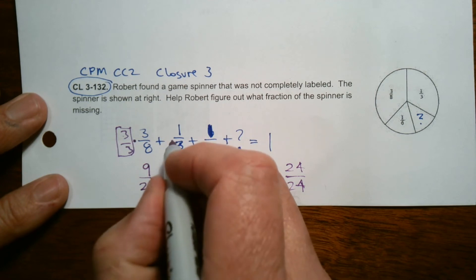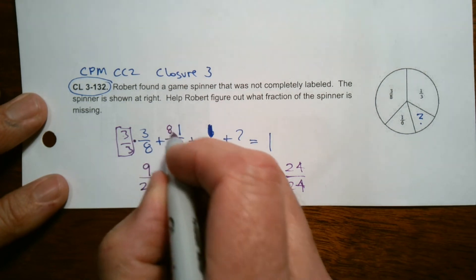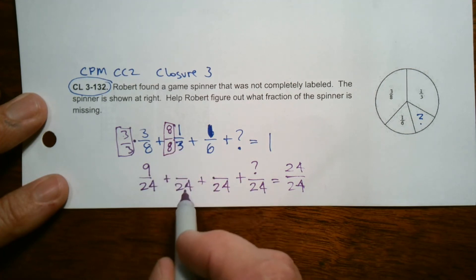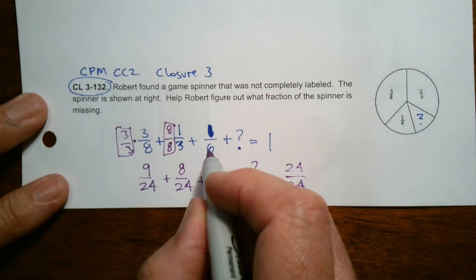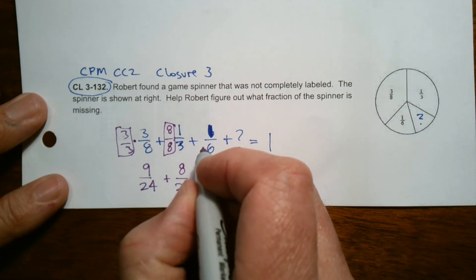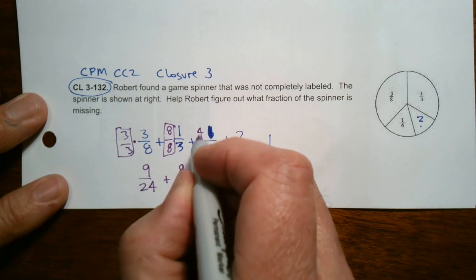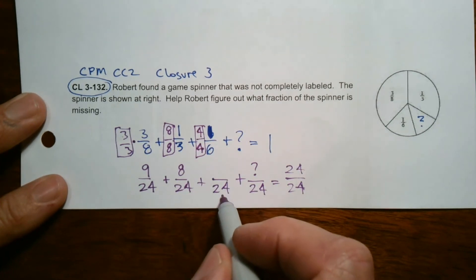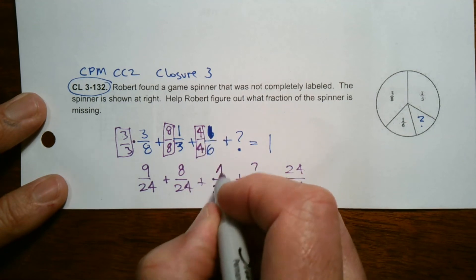My giant 1 here is going to be 8 over 8. To get this, 8 times 3 is 24. So 8 times 1, that becomes an 8. My giant 1, how do I get from 6 to 24 as I multiply by 4? So my giant 1 is going to be 4 over 4 when I multiply that to get this common denominator of 24. So 4 times 1 is 4.